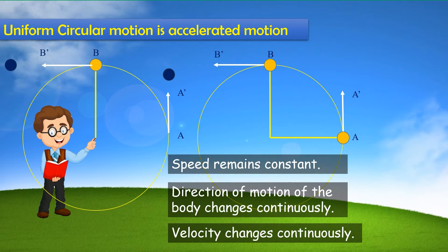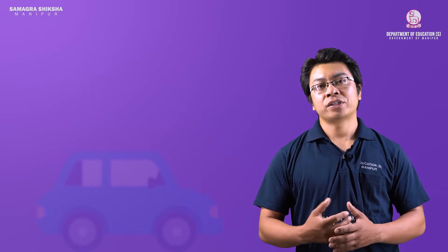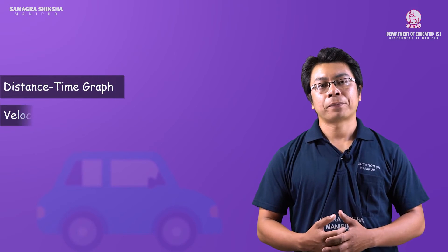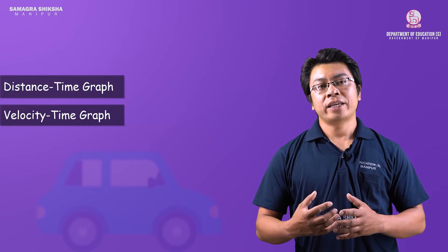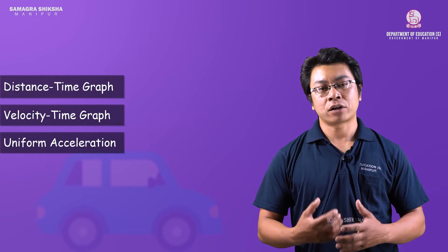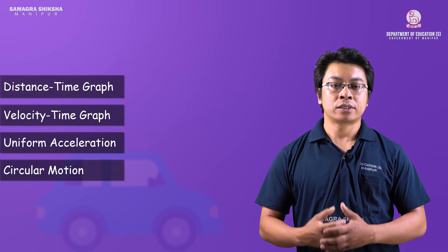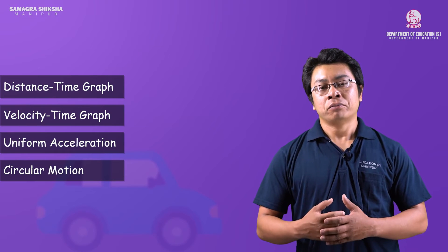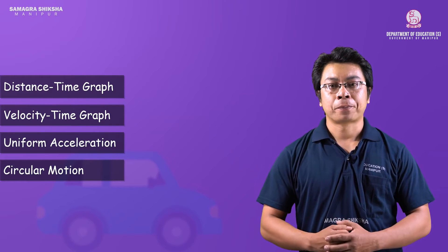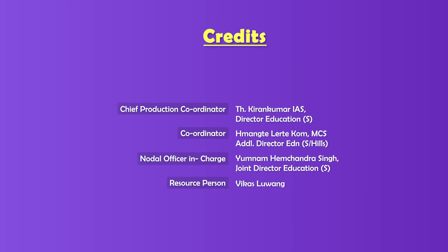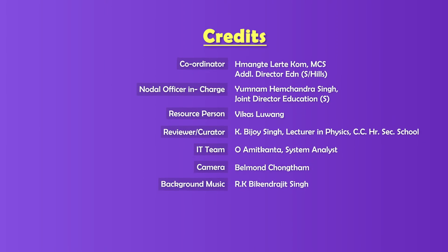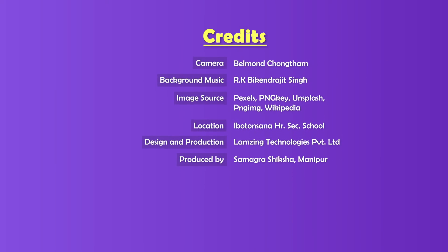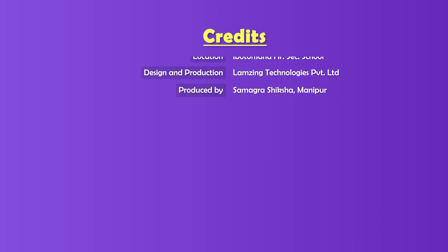We have studied motion — distance-time graphs, velocity-time graphs, uniform acceleration, and circular motion. This completes the chapter on motion in class 9 physics. Thank you.